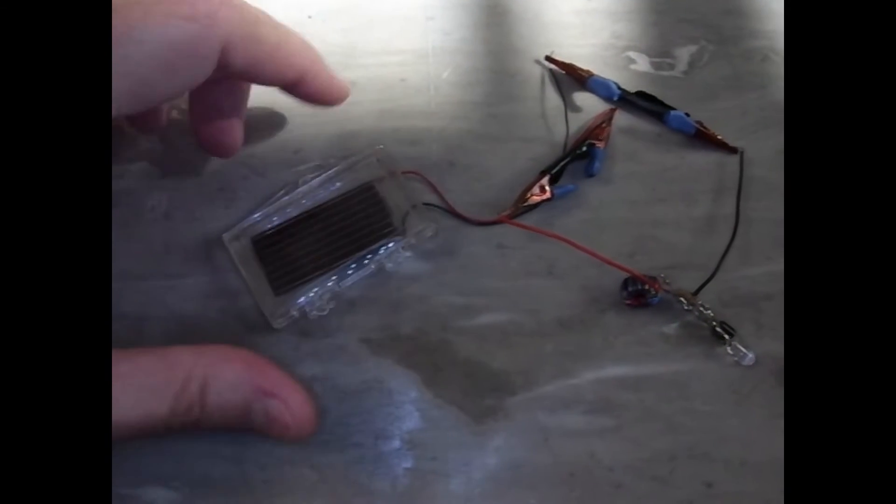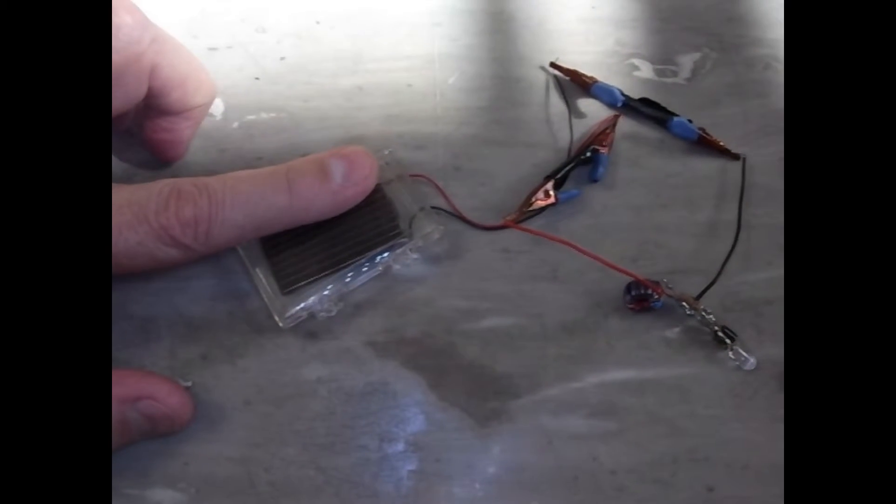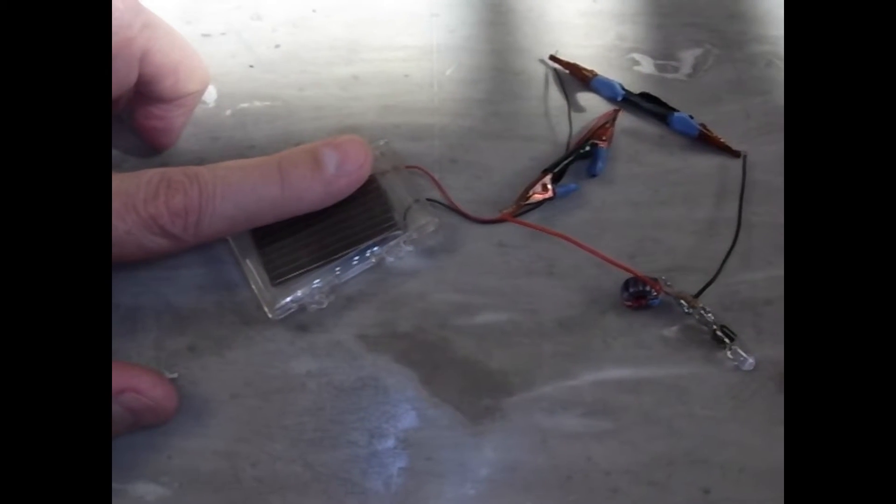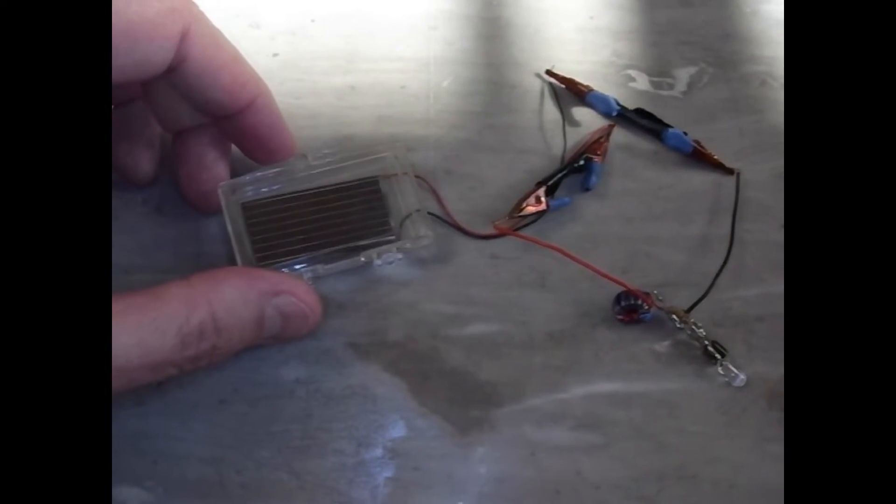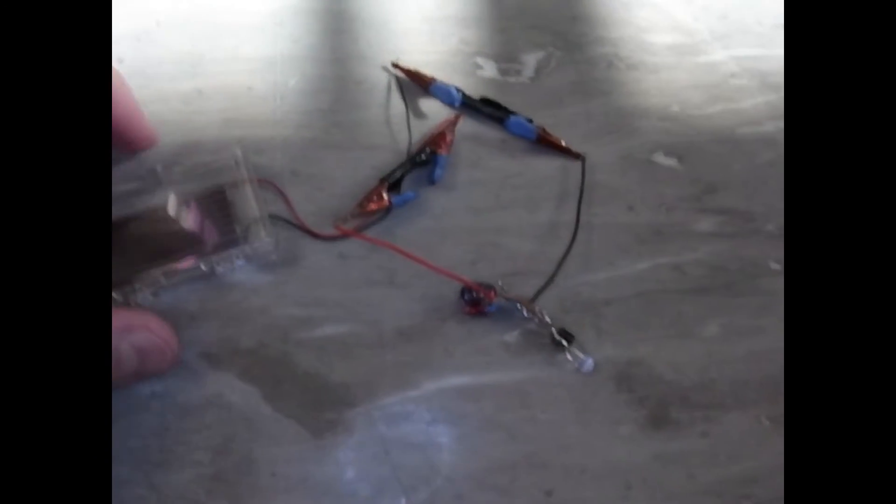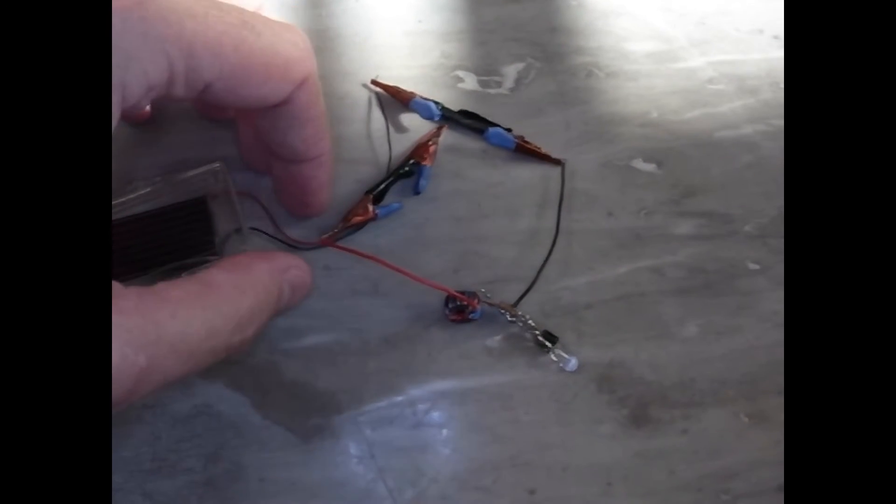So here I have a single solar cell. You can see it's not very big, about an inch and a half long, 3-4 centimeters long, and it's supposed to produce something like 300 milliamps at half a volt, and we got that connected to our Joule Thief.